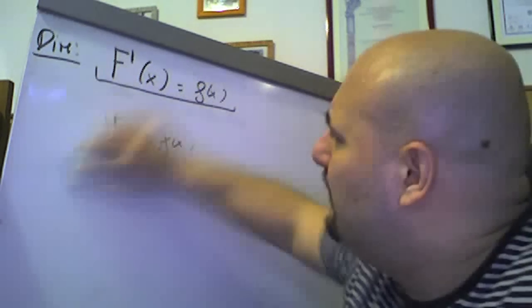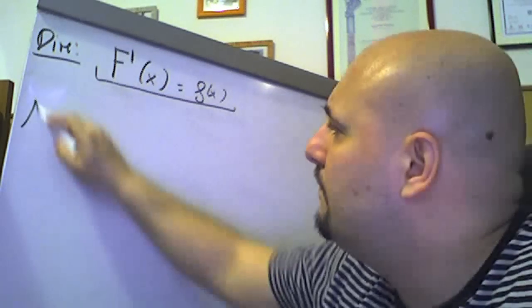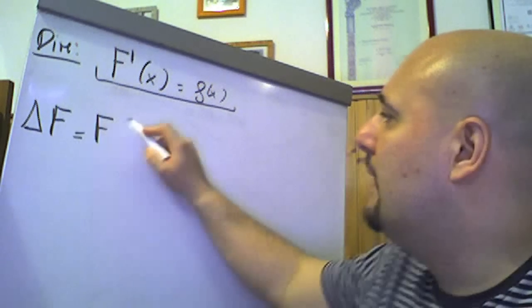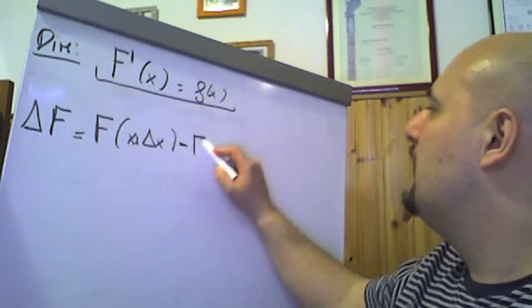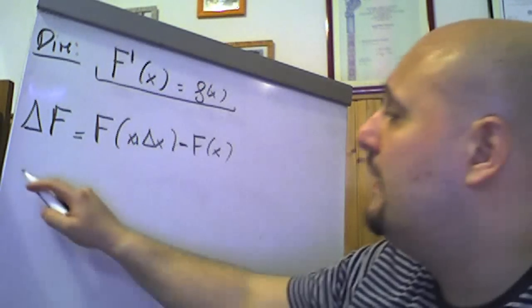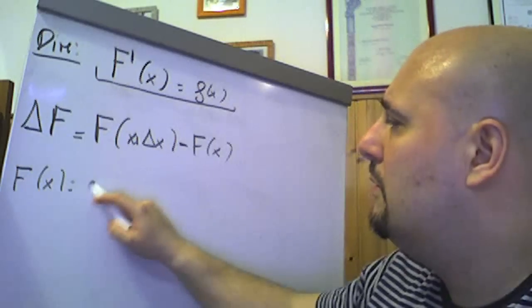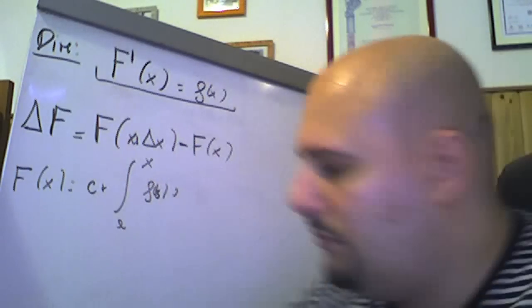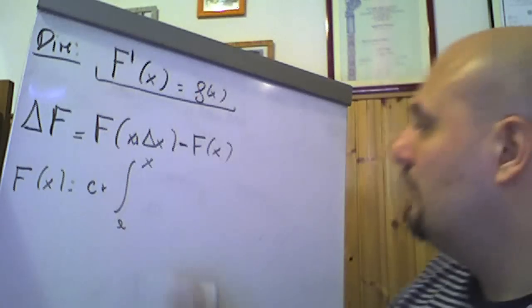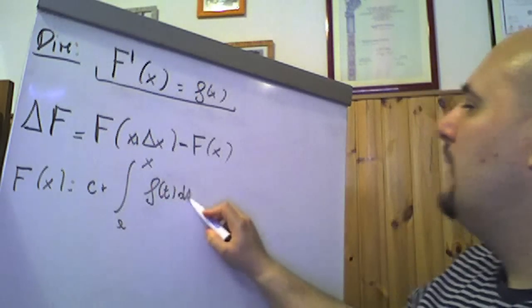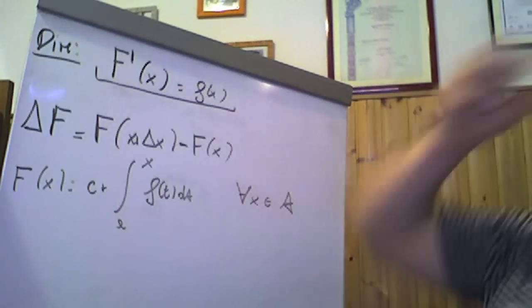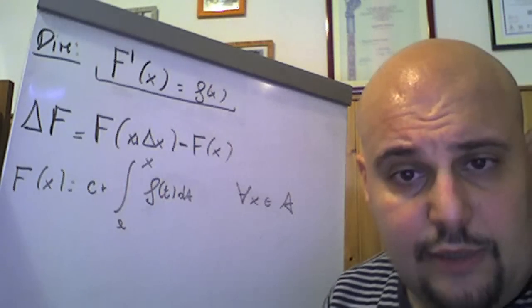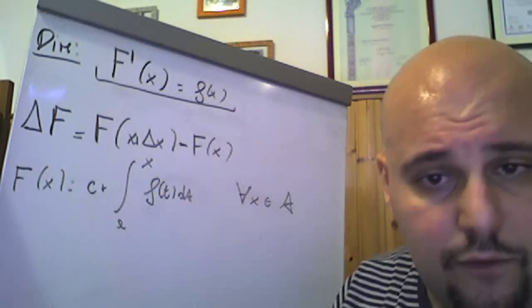Andiamo a scrivere chi è ΔF grande. Dunque, ΔF grande, se Δx è un arbitrario incremento, sarà pari evidentemente a F grande di x più Δx meno F grande di x. F grande di x è pari a c più l'integrale tra a e x di f di t dt. Facciamo notare che utilizziamo la variabile t di integrazione; abbiamo già visto come potremmo utilizzare la variabile u. Certamente si utilizza la variabile t per non confonderla con la x.